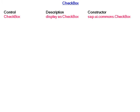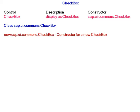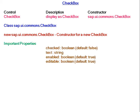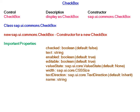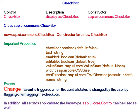Coming to checkbox — the constructor is sap.ui.commons.CheckBox and belongs to the class sap.ui.commons.CheckBox. For creating a new checkbox, the constructor you have to write is: new sap.ui.commons.CheckBox. The important properties are: checked, text, enabled, editable, value state, width, text direction, and name. The change event is triggered when the control status is changed by the user by flagging or unflagging the checkbox. In addition, all settings applicable to the base type sap.ui.core.Control can be used as well.